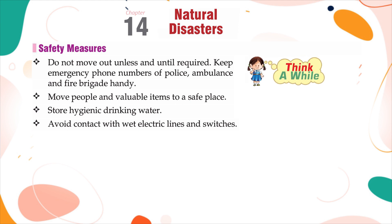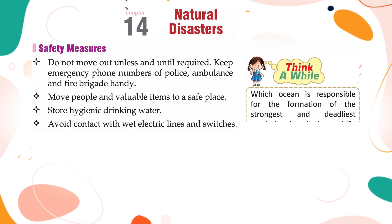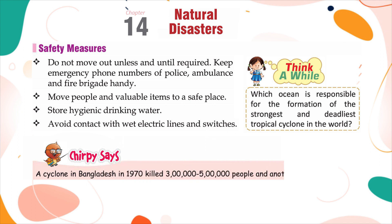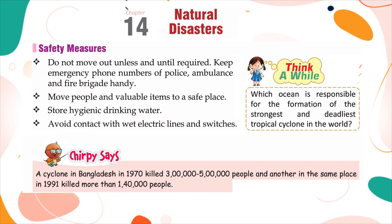Think a while: Which ocean is responsible for the formation of the strongest and deadliest tropical cyclone in the world? A cyclone in Bangladesh in 1970 killed 3 lakh to 5 lakh people, and another in the same place in 1991 killed more than 1 lakh 40,000 people.